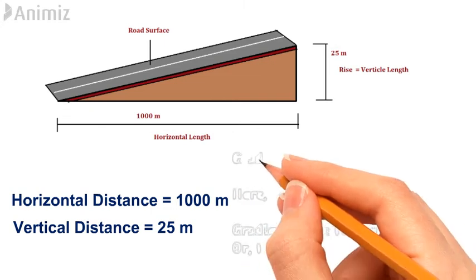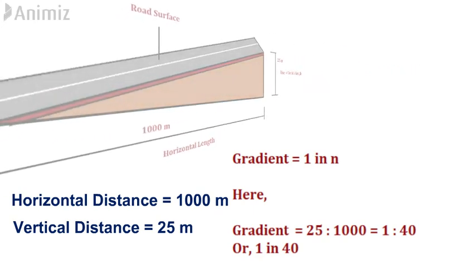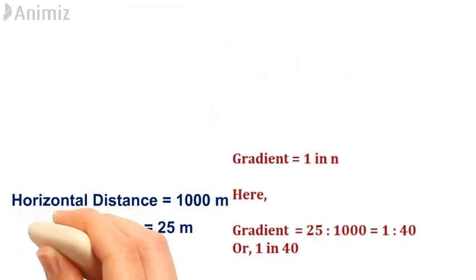From the definition, we can write gradient equals 25 over 1000 equals 1 in 40.